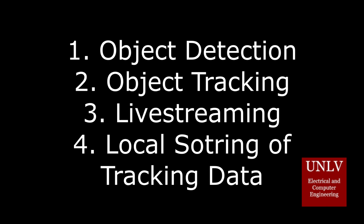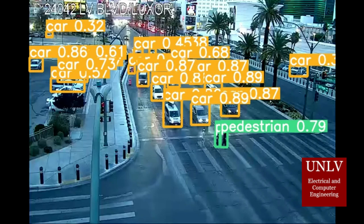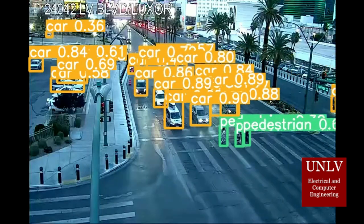Our current project is capable of the following items concurrently: object detection, object tracking, live streaming, and local storing of tracking data. In addition, we verified the precision of the model by providing test values in a confusion matrix. The confusion matrix evaluates the accuracy of the model's performance — elements on the diagonal indicate that the model's predictions match the testing data. The higher the values on the diagonal, the higher the accuracy of the model in testing.